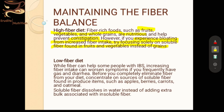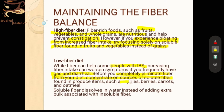Soluble fiber, found in fruits and vegetables rather than grains, is preferable when bloating occurs. A low fiber diet can help a small group of people suffering from severe irritable bowel syndrome or inflammatory bowel disease, since increasing fiber can worsen symptoms by causing gas. If you have chronic diarrhea, fiber won't help. So before eliminating fiber completely, concentrate on soluble fiber sources such as apples, berries, carrots, and oatmeal.